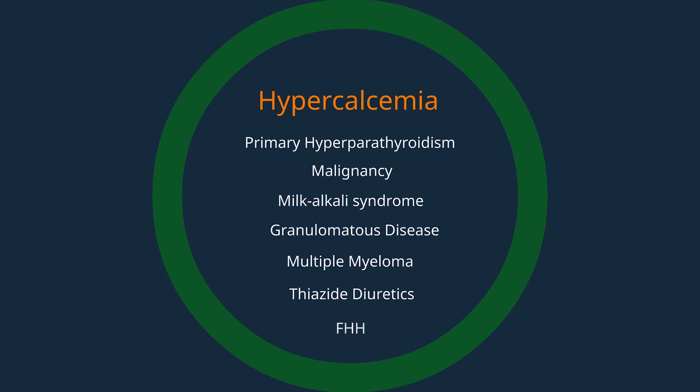Milk alkali syndrome is often described as vitamin D intoxication and presents with high calcium and high phosphorus. If the history suggests a chronic illness, either infectious or systemic — such as tuberculosis or sarcoidosis — these mimic vitamin D intoxication. Multiple myeloma is defined by multiple organ dysfunction including renal dysfunction, anemia, bone pain, and hypercalcemia. Thiazide diuretics can cause mild hypercalcemia and hypocalciuria, and FHH is a familial syndrome which often affects multiple family members.